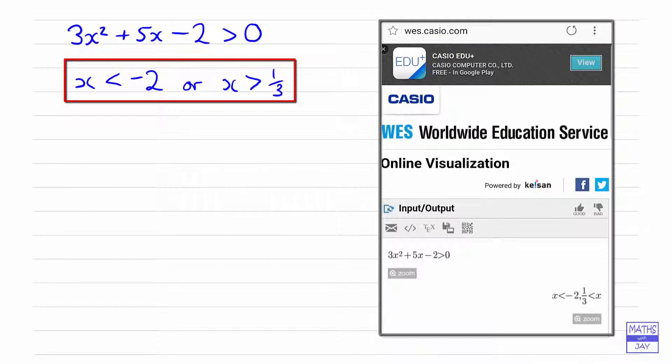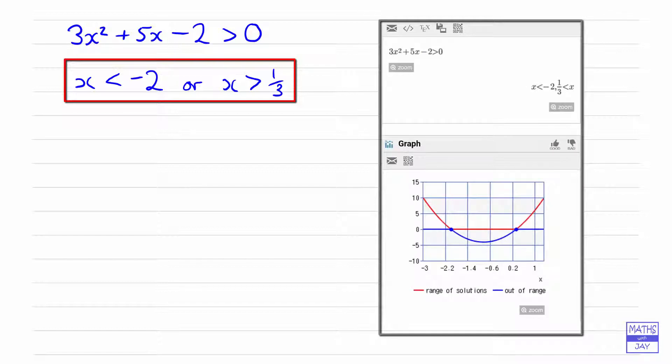So if you open that link, that will take you to Casio's website, so that will be wes.casio.com, and then you ought to see the same sort of thing that you've just seen on the screen of the calculator: the x is less than minus 2 and a third is less than x, but additionally you'll get a little graph. And so you can see that the range of your solutions is shown on the curve. The curve will be in red when we've got the solution, so that's where x is less than minus 2 and x is greater than a third.